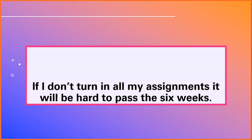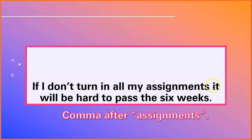My dependent clause is 'if I don't turn in all my assignments.' If I walk up to you and say, 'If I don't turn in all my assignments,' and then stop talking, you're gonna be confused because I'm missing information. That's my dependent clause. 'It will be hard to pass the six weeks' is a complete thought — it can stand by itself, so that's independent. If my dependent clause is the leader and it's at the beginning of the sentence, I need a comma at the end of the dependent clause. So I'm gonna need a comma after 'assignments.'